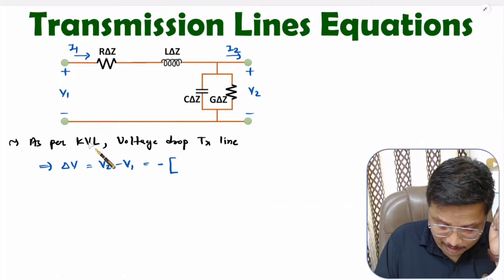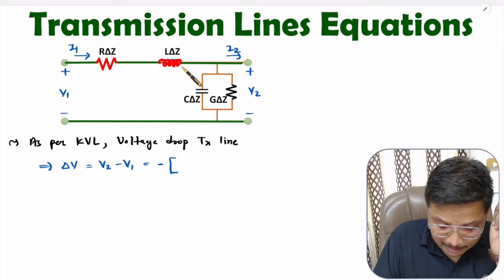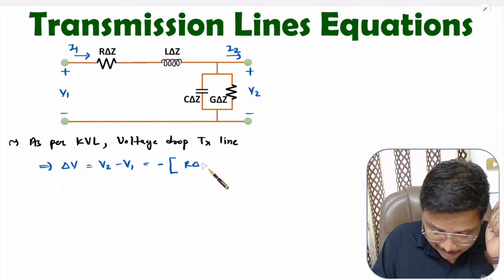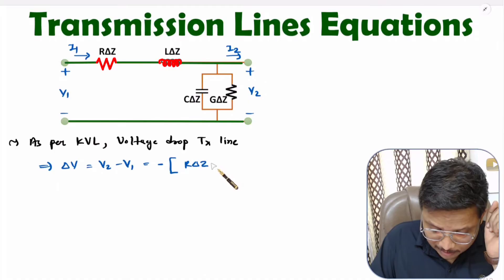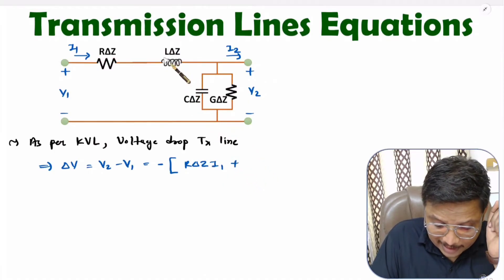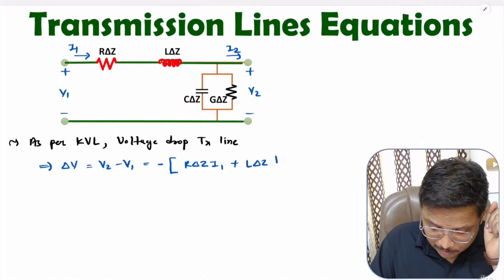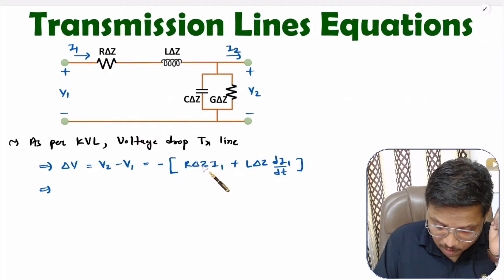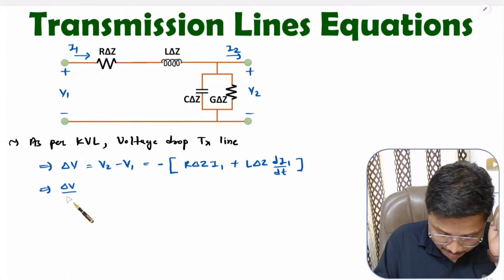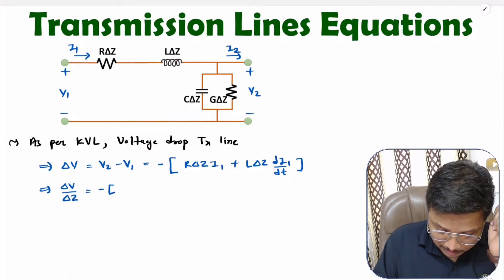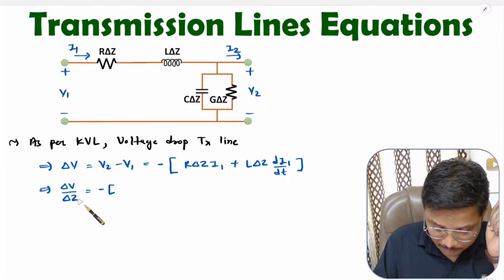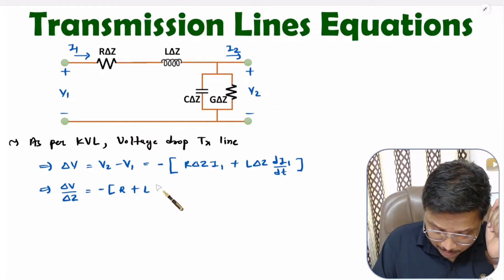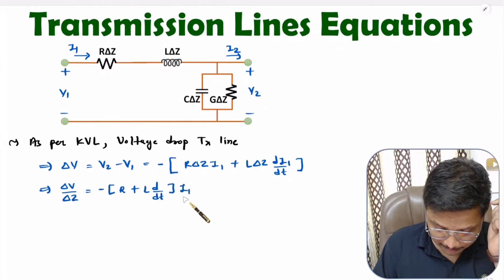As per KVL, the voltage drop is happening across the R and L components. Across R it will be R·ΔZ·I1, and across L it will be L·ΔZ·dI1/dt. To simplify further, taking ΔZ common and dividing, we get: delta V / delta Z equals minus of (R + L·d/dt) times I1. This is the first equation.